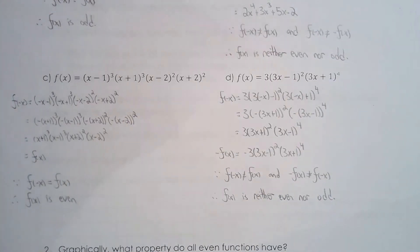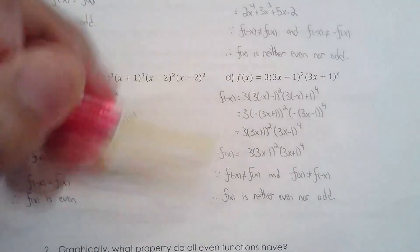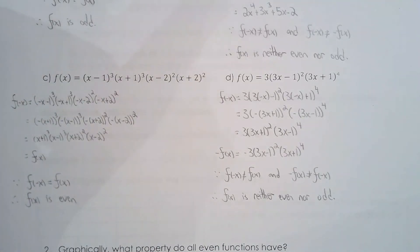For d, I can tell you right off the bat, it's neither. Because there's no symmetry in the zeros, and it's a degree of 6. But once I saw no symmetry in the zeros, I knew it's neither right off the bat.